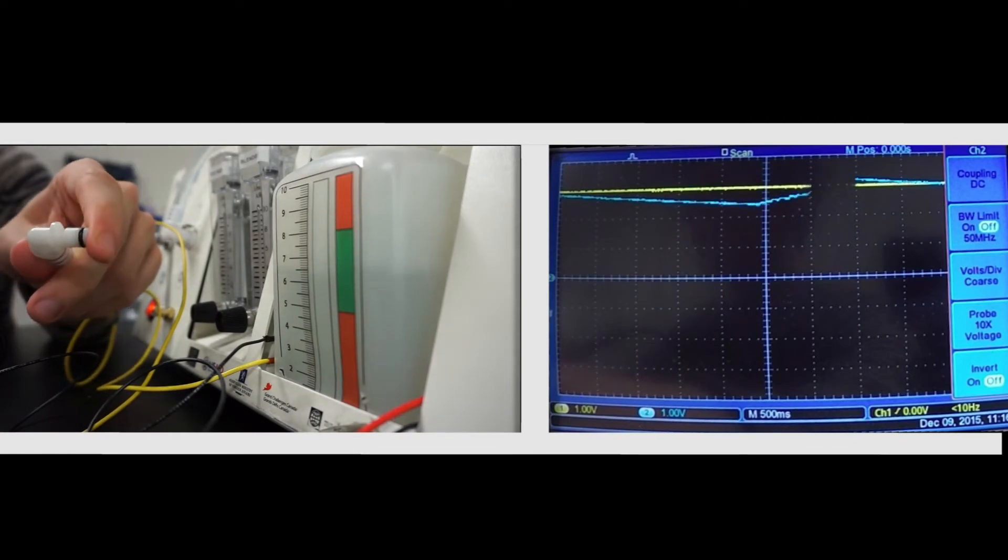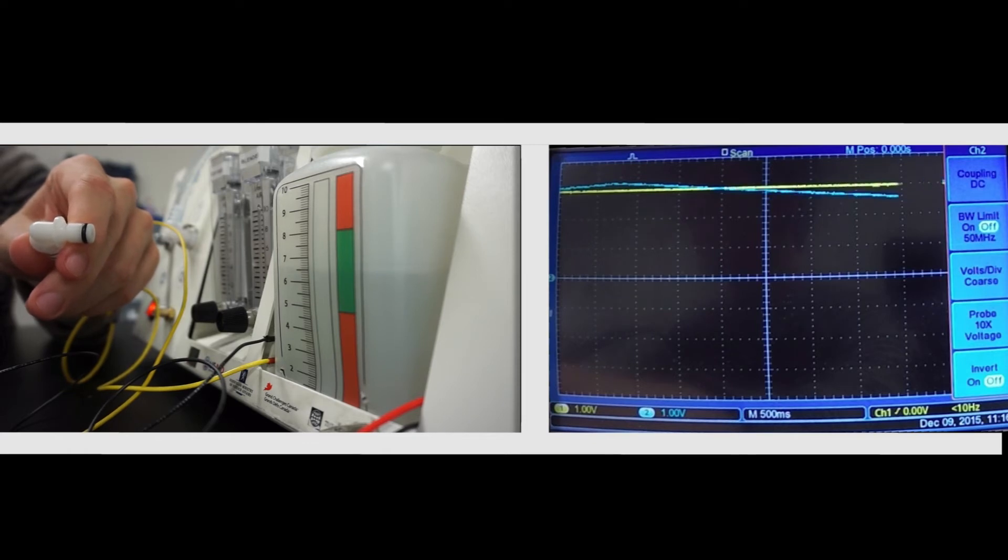The blue line on the right shows the output of the analog front end, which increases when bubbling occurs. When that output falls below a reference voltage set by us, represented by the yellow line, the alarm is triggered after a short delay.